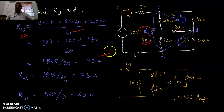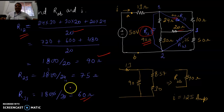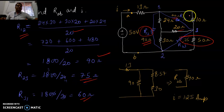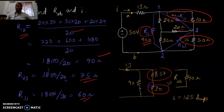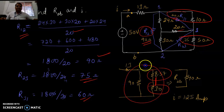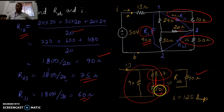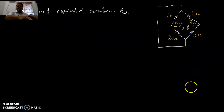Similarly, R13 is 160 ohms and R23 is 75 ohms. Now 75 and 50 are in parallel, and 60 and 10 are in parallel giving 8.53, plus 30 in series. The entire equivalent gives R = 40 ohms and the current is 50 divided by 40 equals 1.25 amperes.